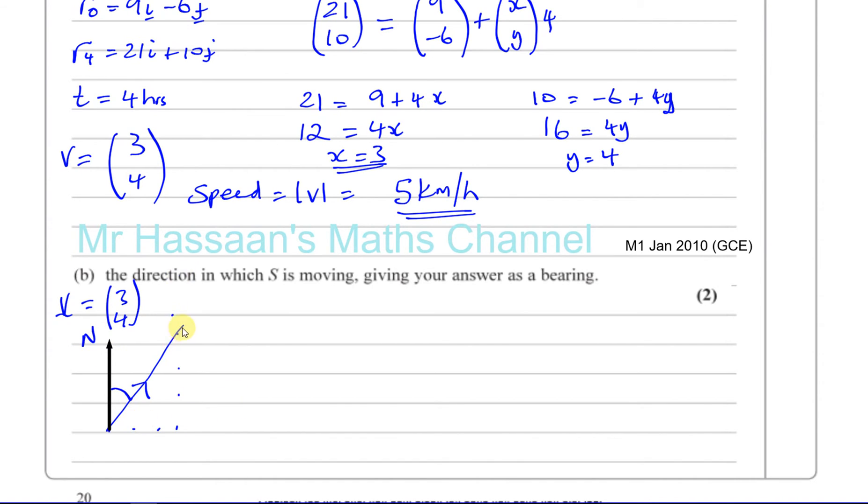We need to find this angle here. If we consider the triangle we formed, this is 3, this is 4. Now this angle here, let's call it theta, is the same as this angle here, which we have to find. This will be the bearing, measured from the north line clockwise. We can say the tangent of our angle is equal to the opposite over the adjacent. Therefore, the angle we need, theta, is equal to inverse tan of three-quarters.